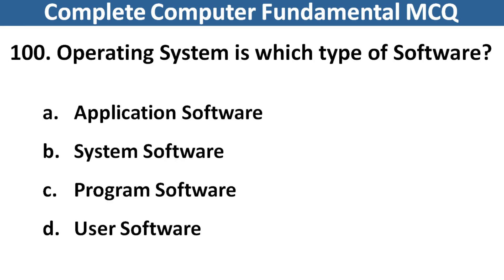Operating system is which type of software? Right answer is option B, System Software. Thank you.